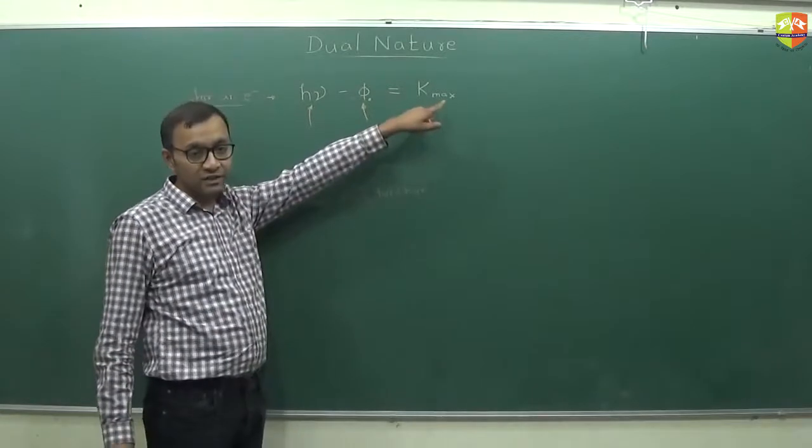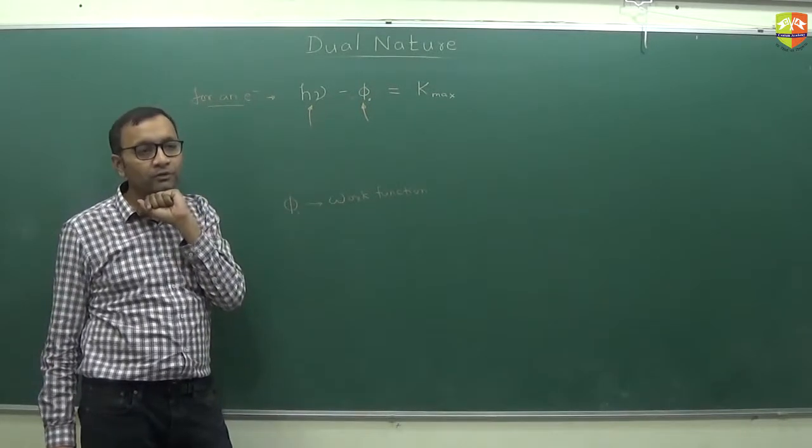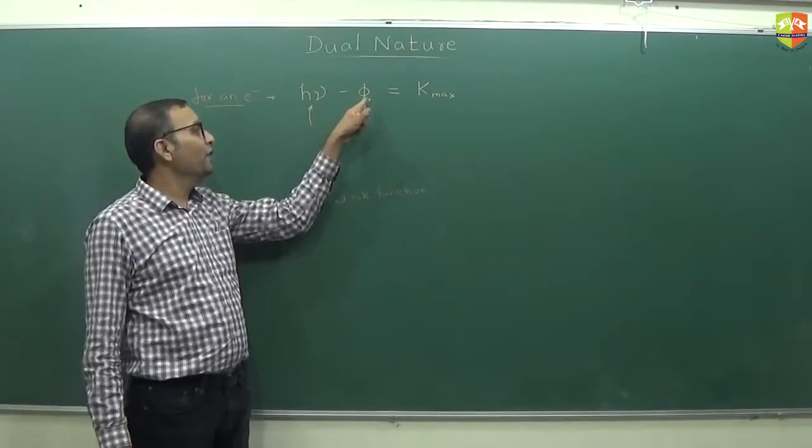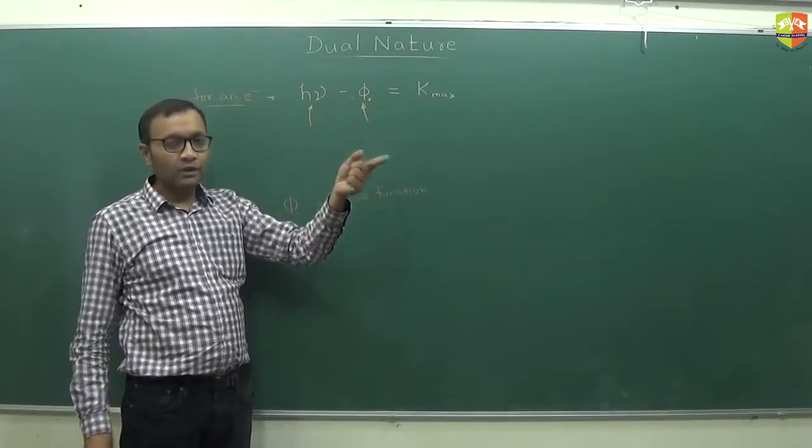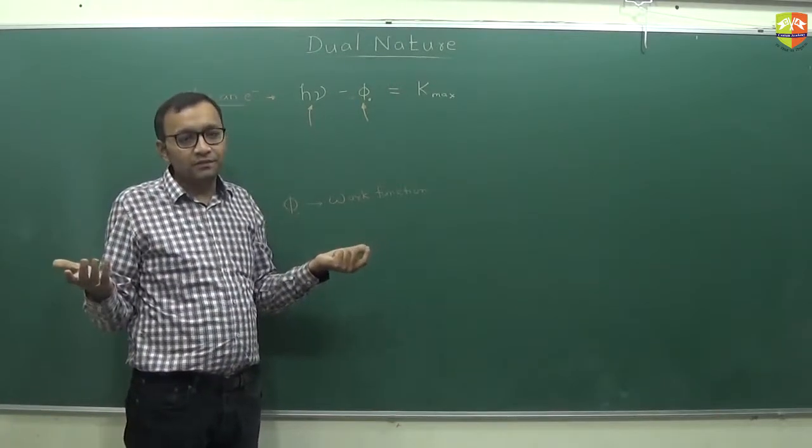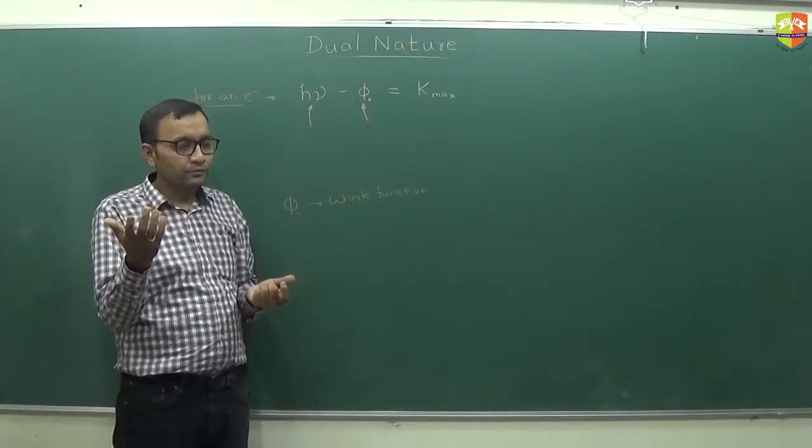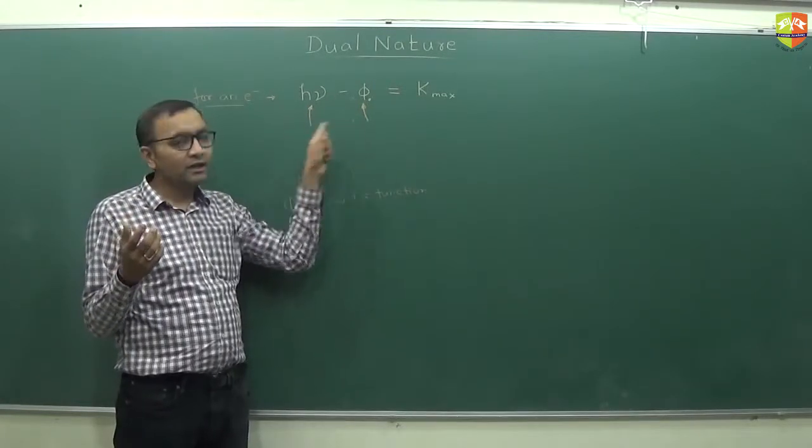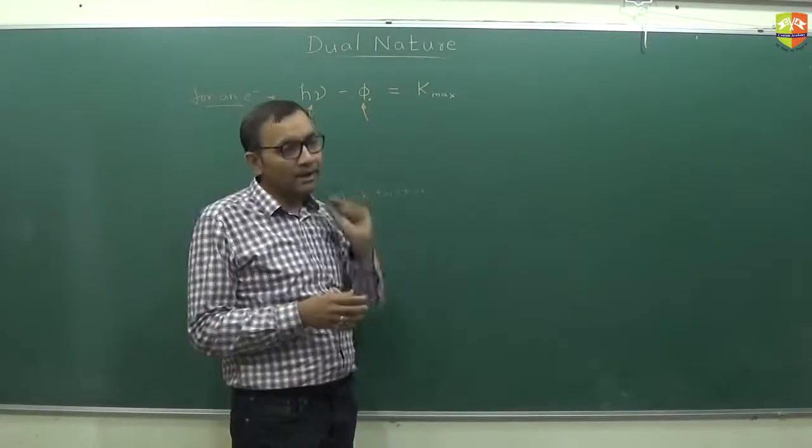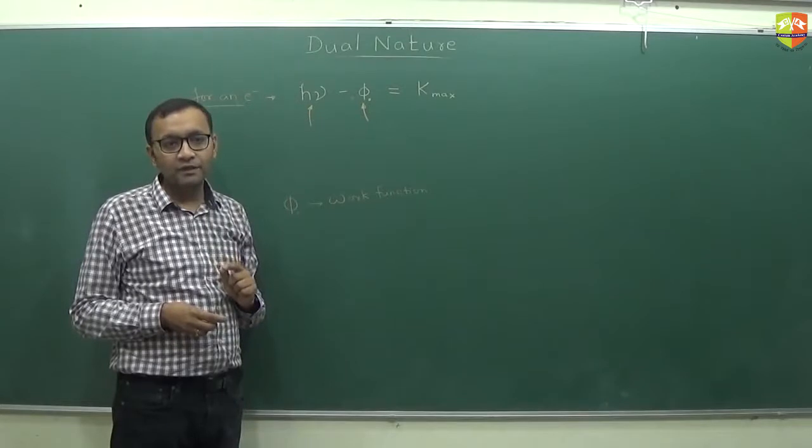So this is the maximum kinetic energy of the electrons that are coming out. What about minimum kinetic energy? Minimum will be zero. You need phi naught amount of energy for it to come out. You give phi naught, it takes phi naught and expends it to come out. It has now zero energy. So minimum energy when the electron comes out from the surface is zero. Maximum you can get from this equation. There will be all kinds of electrons that will be coming out from zero energy till maximum kinetic energy, but this will happen only when mu is more than threshold frequency.